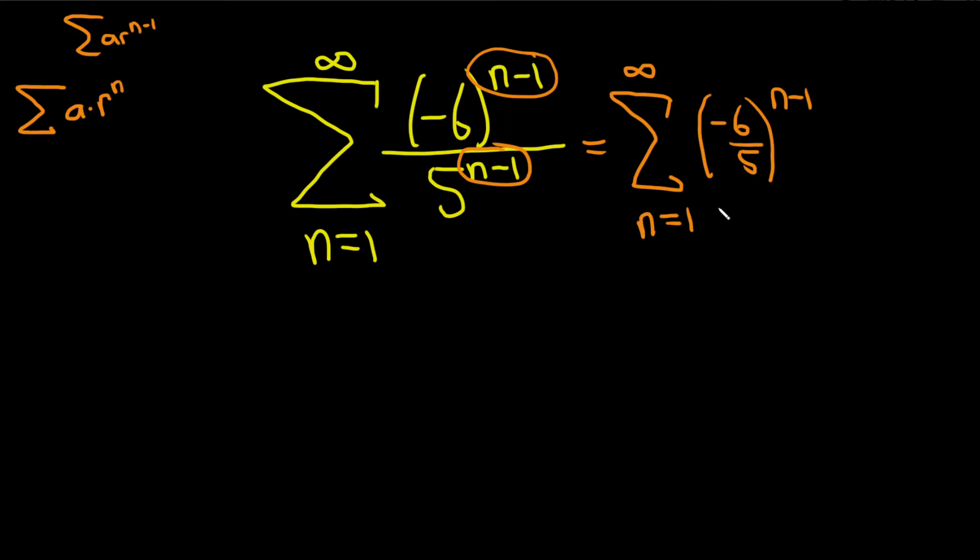So now we can identify r. You see r here is the number that's being raised to the power, so r is negative 6 over 5.